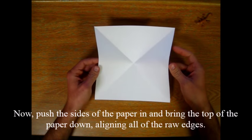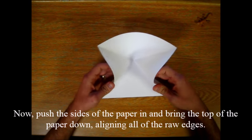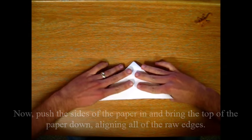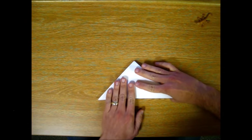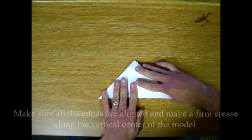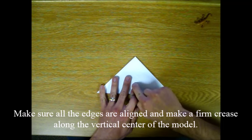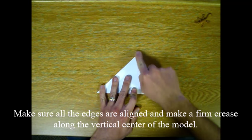Now push the sides of the paper in and bring the top of the paper down, aligning all of the raw edges. Make sure all the edges are aligned and make a firm crease along the vertical center of the model.